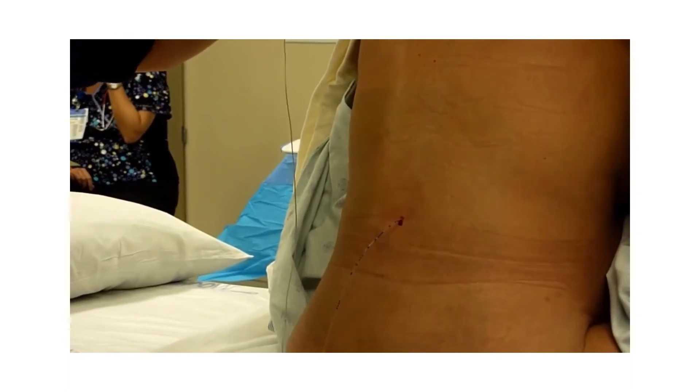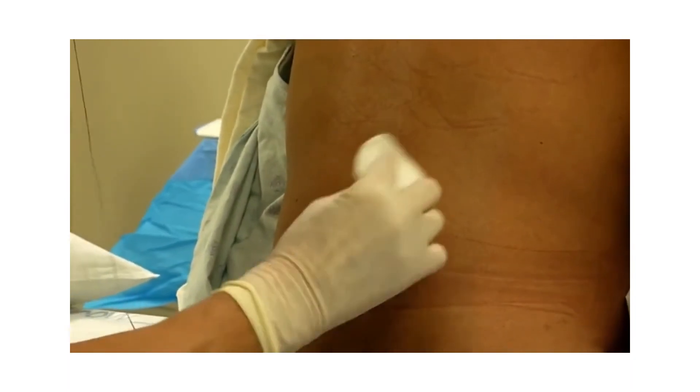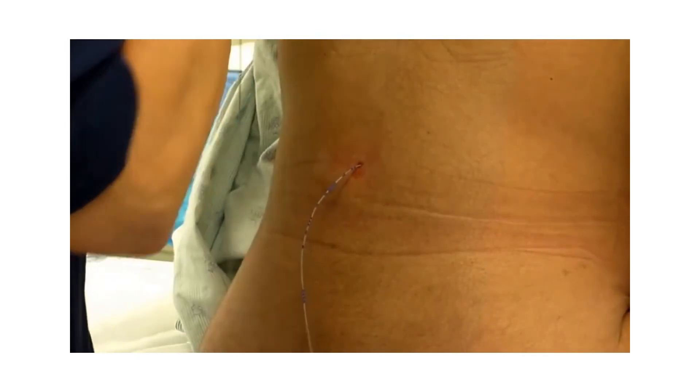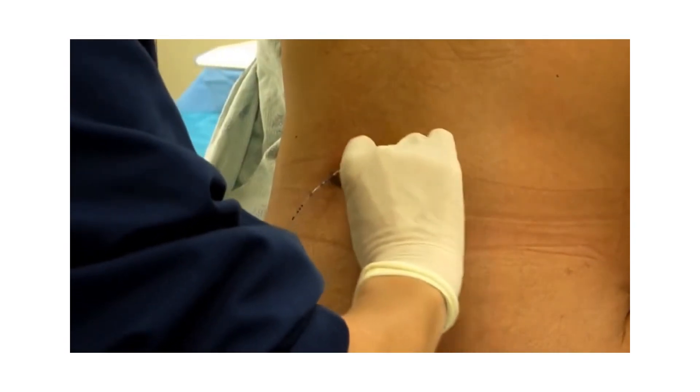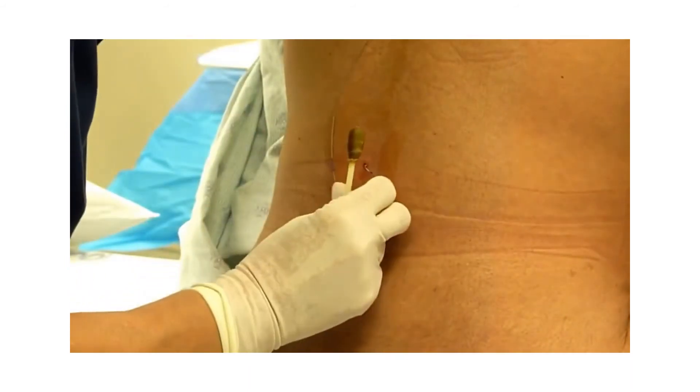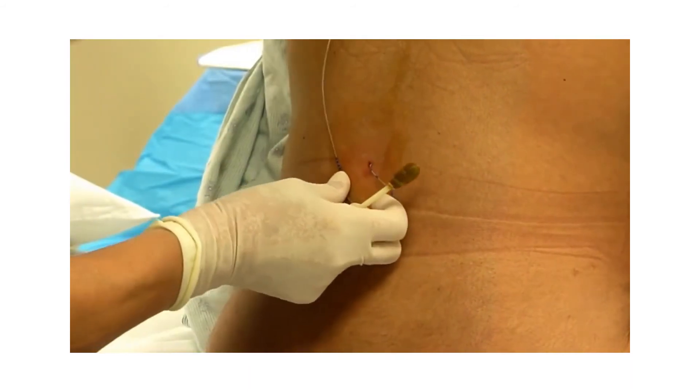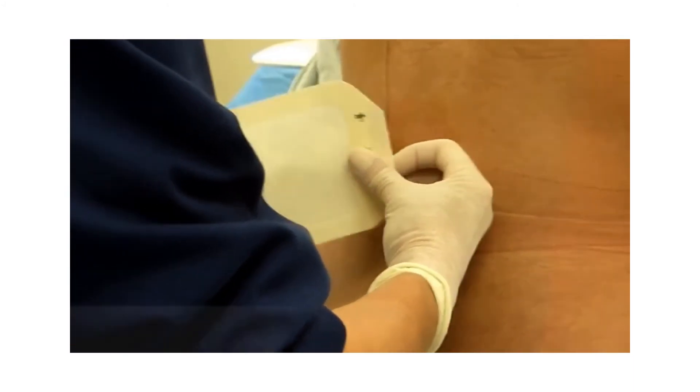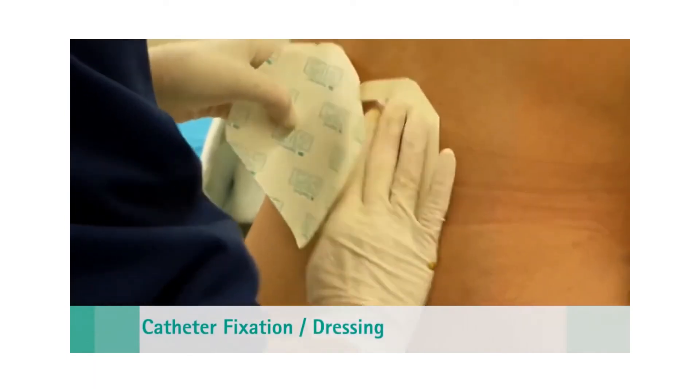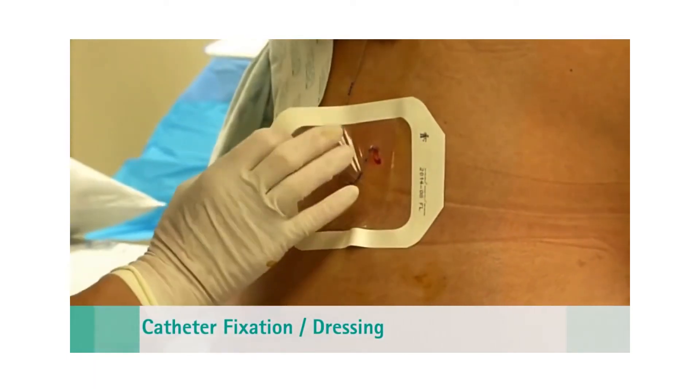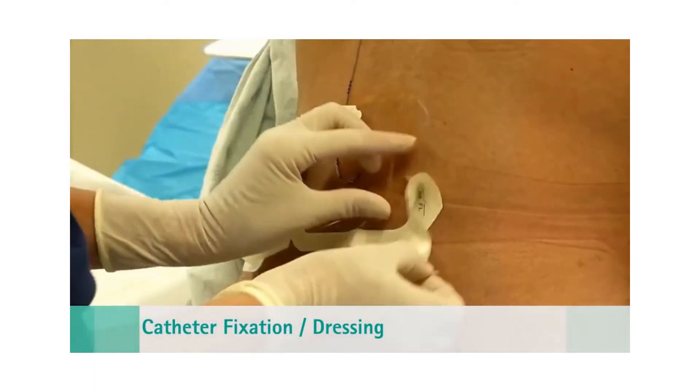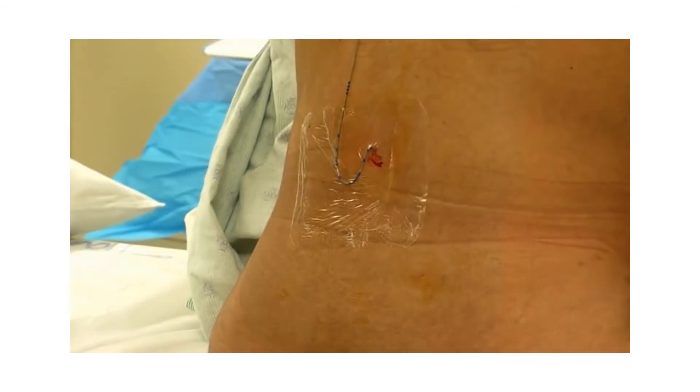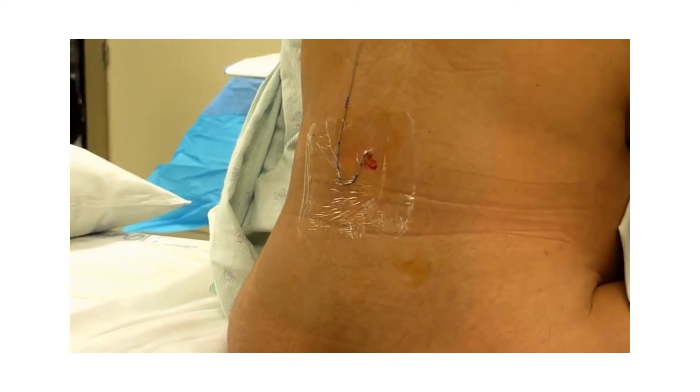All that's left now is to tape the catheter to the back of the patient. We use benzoin to make sure that the Tegaderm stays on well. We add protective pieces of tape all around the Tegaderm and over the catheter as it runs up the patient's back.